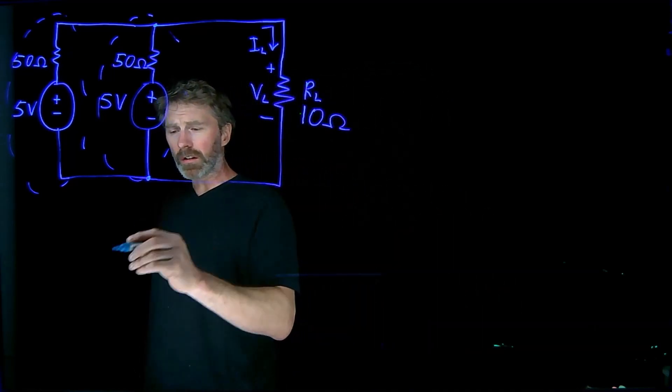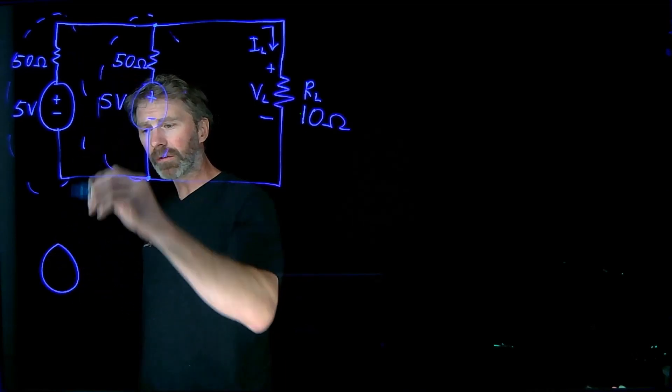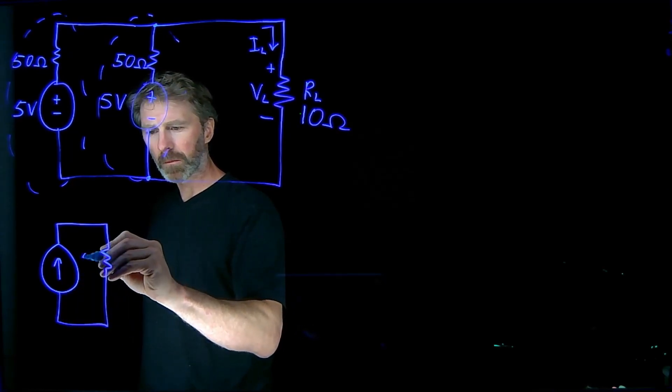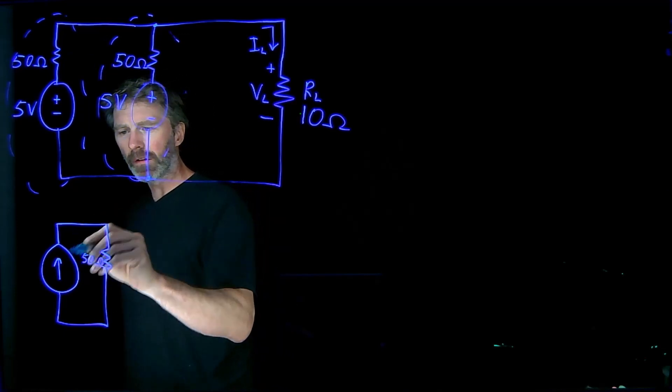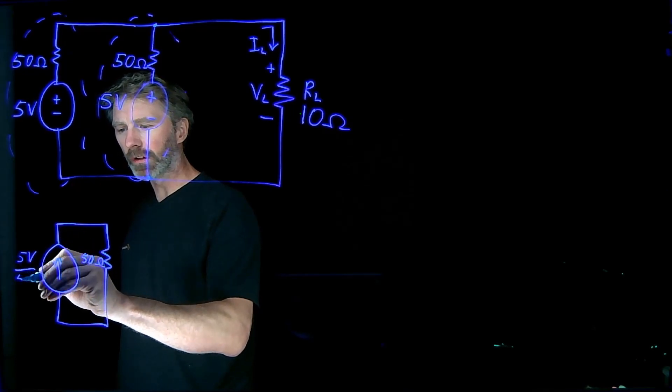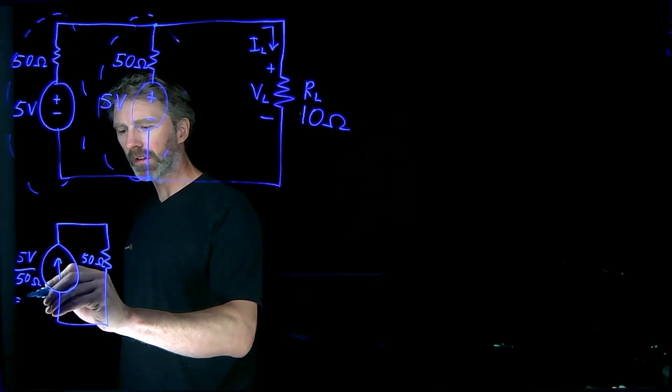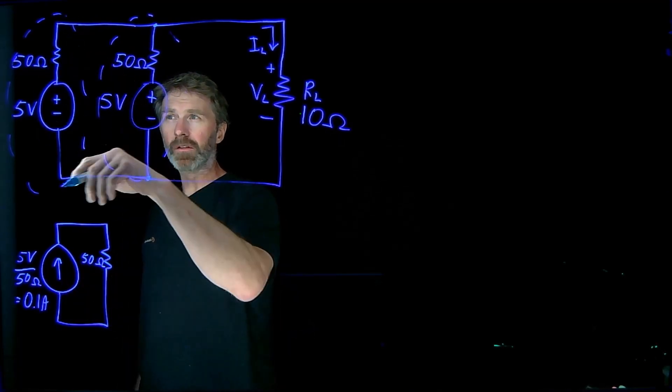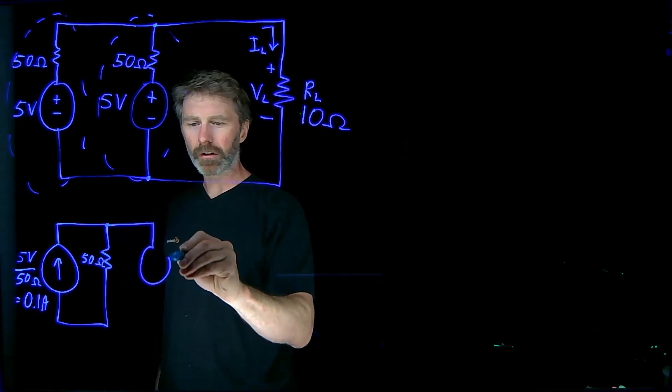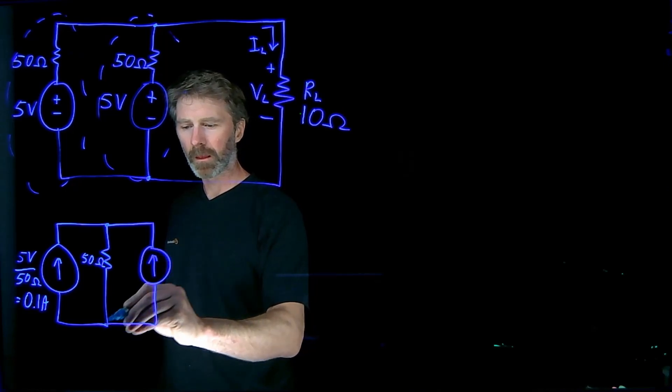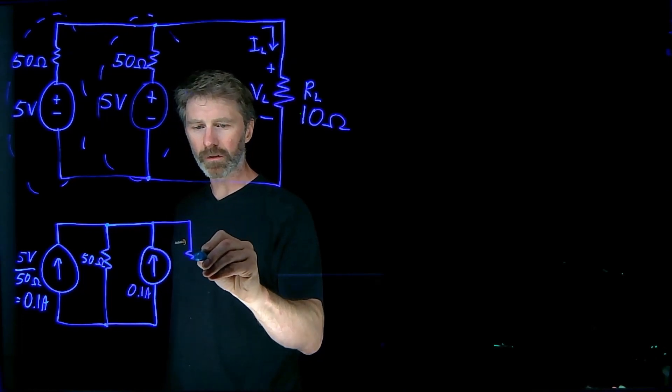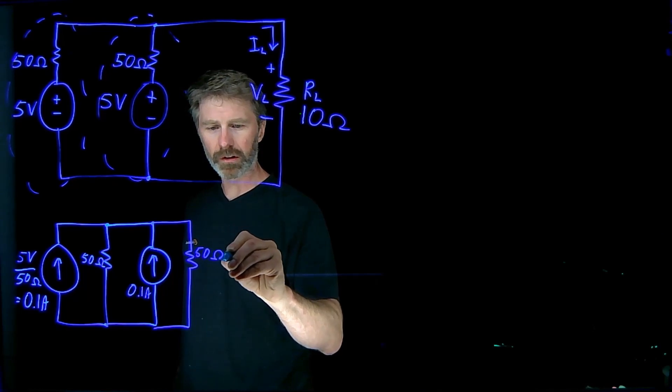And just what that's going to look like will be this. So that voltage source can be converted into a current source with its parallel resistor. And the value of the current from this current source is 5 volts over 50 ohms, which is 0.1 amps. So that's the conversion of this voltage source to a current source. We can do the exact same thing with the other current source. It's identical, so it'll also be 0.1 amps and have a 50 ohm parallel resistor internal to it.